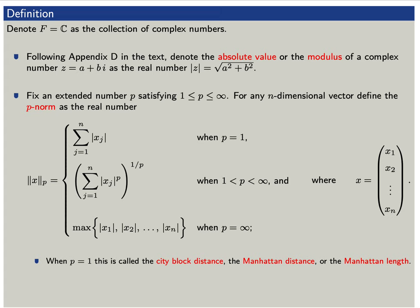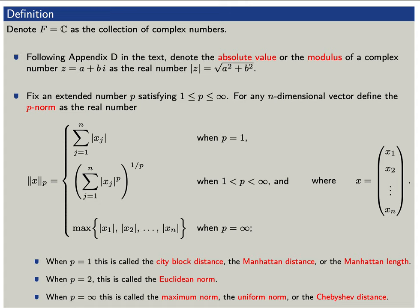When p equals 1, we call this the Manhattan distance. When p equals 2, we call this the Euclidean norm. And when p equals infinity, we call this the Chebyshev norm.